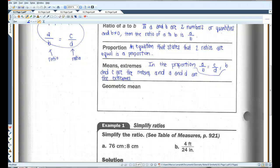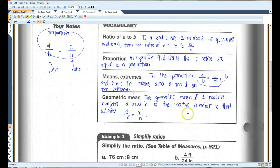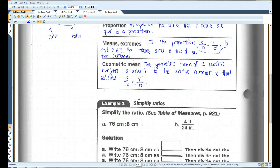When we talk about geometric mean, the geometric mean of two positive numbers A and B is the positive number X that satisfies A over X equals X over B. And we'll do an example of this in a little bit.